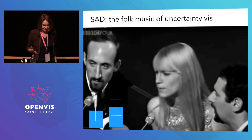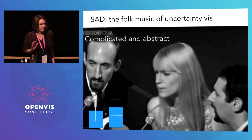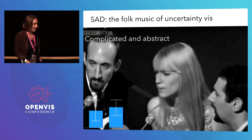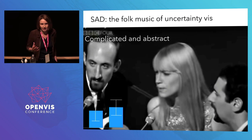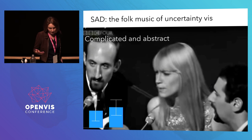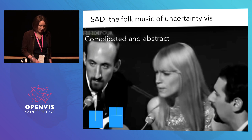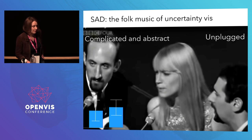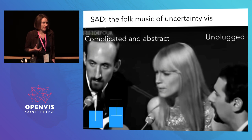Why do I say static aggregate distribution plots are the folk music of uncertainty viz? For one, folk music has complicated, abstract lyrics — lots of metaphors, nobody really knows what the song is about. Similarly, static aggregate distribution plots like error bars represent something complicated and abstract — people don't really know what they're looking at. Folk music is also often unplugged: they could have used technology like amplifiers and synthesizers but chose not to. Similarly, these static plots don't make use of things like interactivity and animation, which could help convey uncertainty to people.